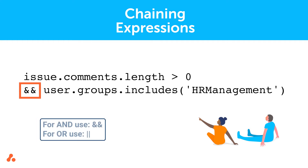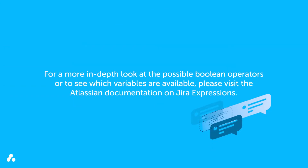For AND, use two ampersands, and for OR, use two vertical lines. For a more in-depth look at the possible Boolean operators or to see which variables are available, please visit the Atlassian documentation on Jira Expressions.